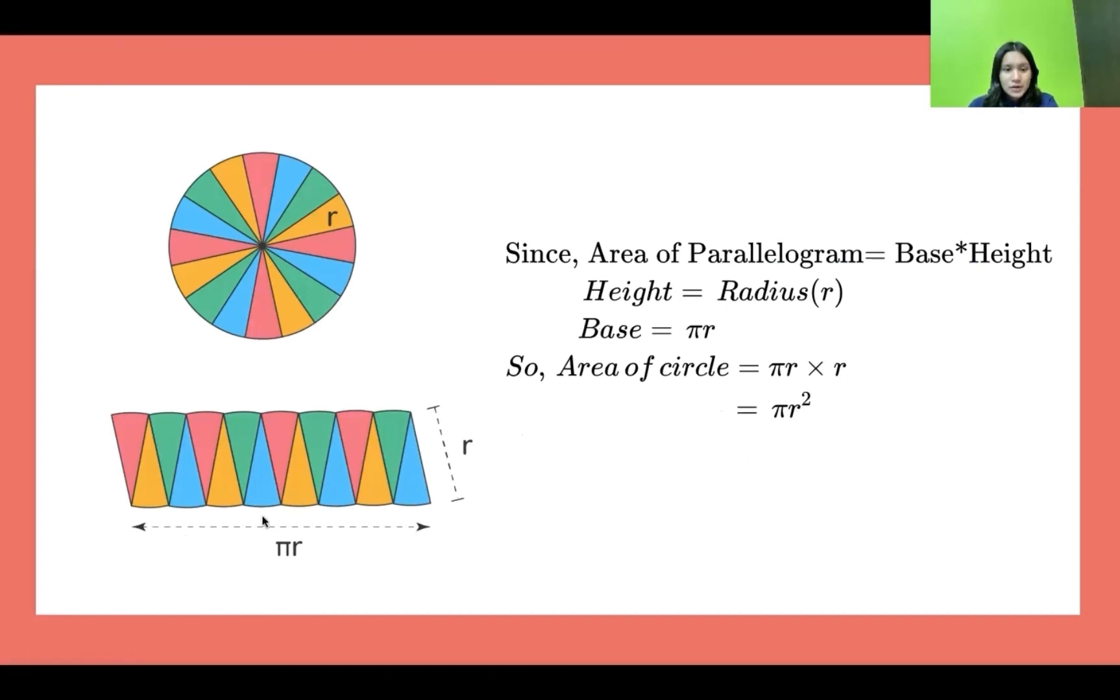Now the base of the parallelogram equals πr. The value of π can be written as 22/7. So now by focusing on the area of parallelogram, we can conclude that the area of circle is πr times r, which equals πr².